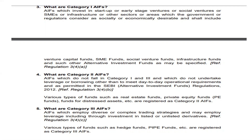Category three funds employ diverse and complex trading strategies, like hedge funds. These funds may employ leverage, including through investment in listed or unlisted derivatives. Examples of category three AIF are hedge funds and PIPE funds.